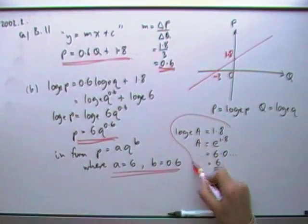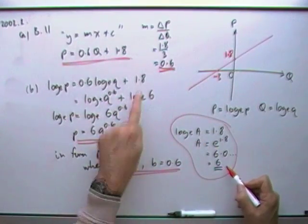The only nasty bit was really this wee bit here, taking this number and making it into a log base e so we can add.